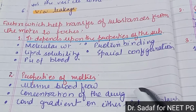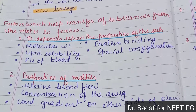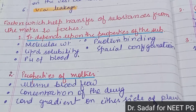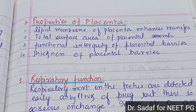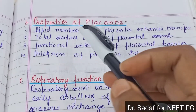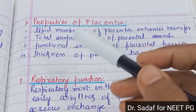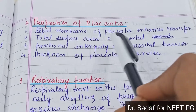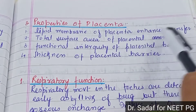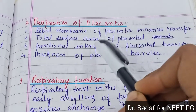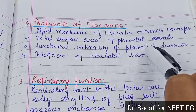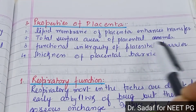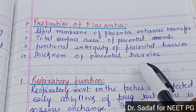Additional factors include the concentration gradient on either side of the placenta, and placental properties. Placental properties that affect transfer include: the lipid membrane of the placenta, which enhances transfer; the total surface area of the placental membrane; the functional integrity of the placental barrier; and the thickness of the placental barrier.